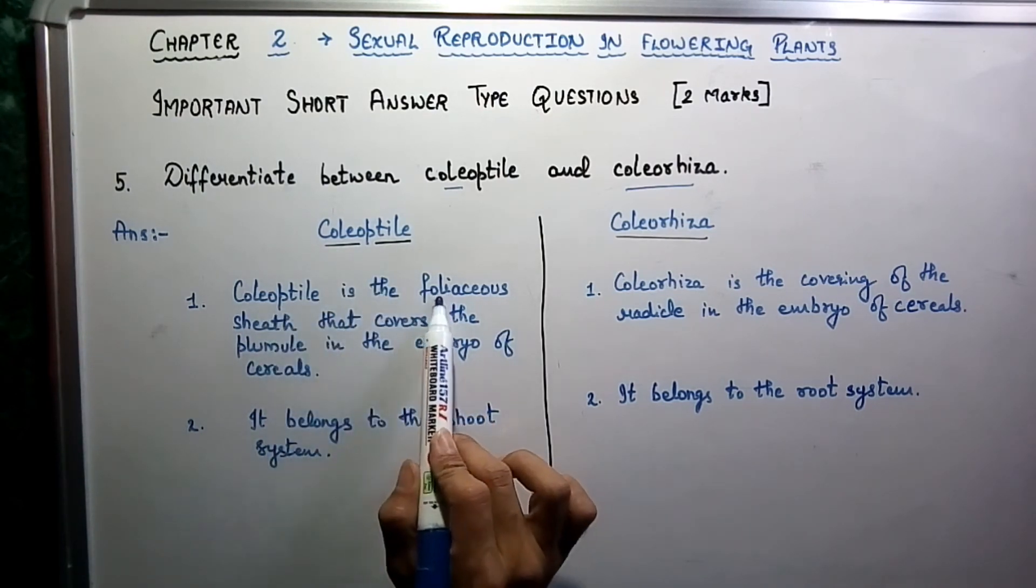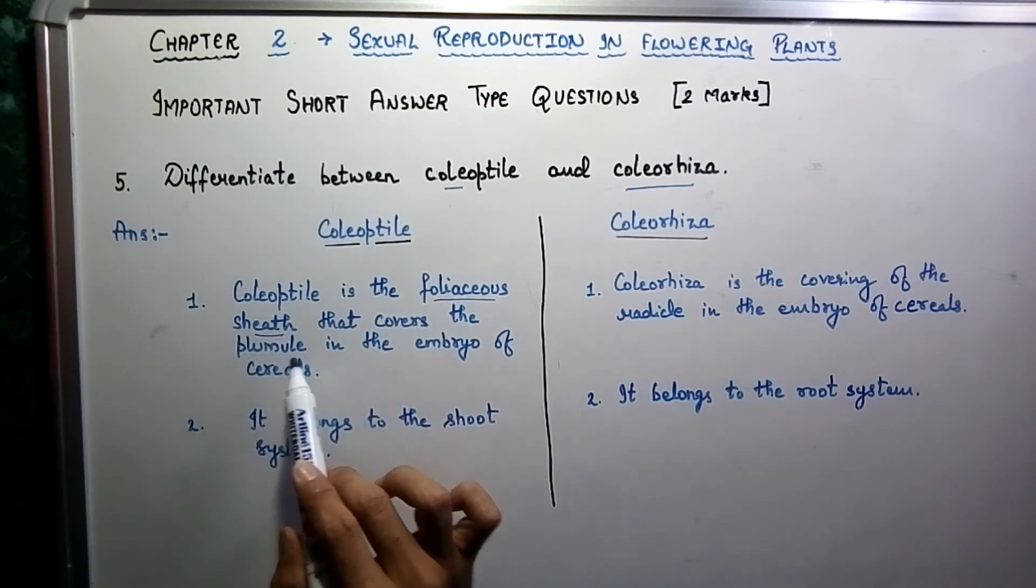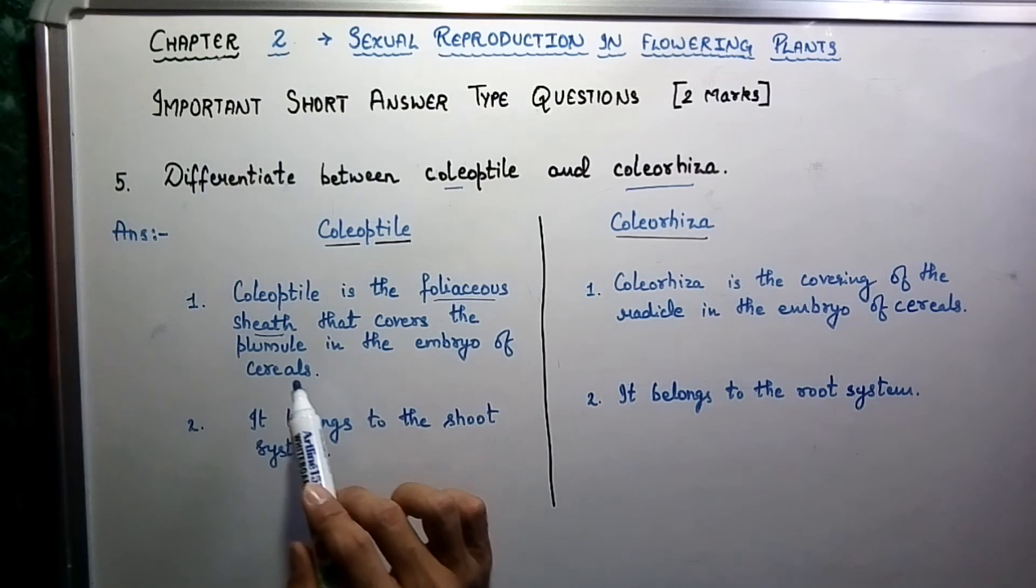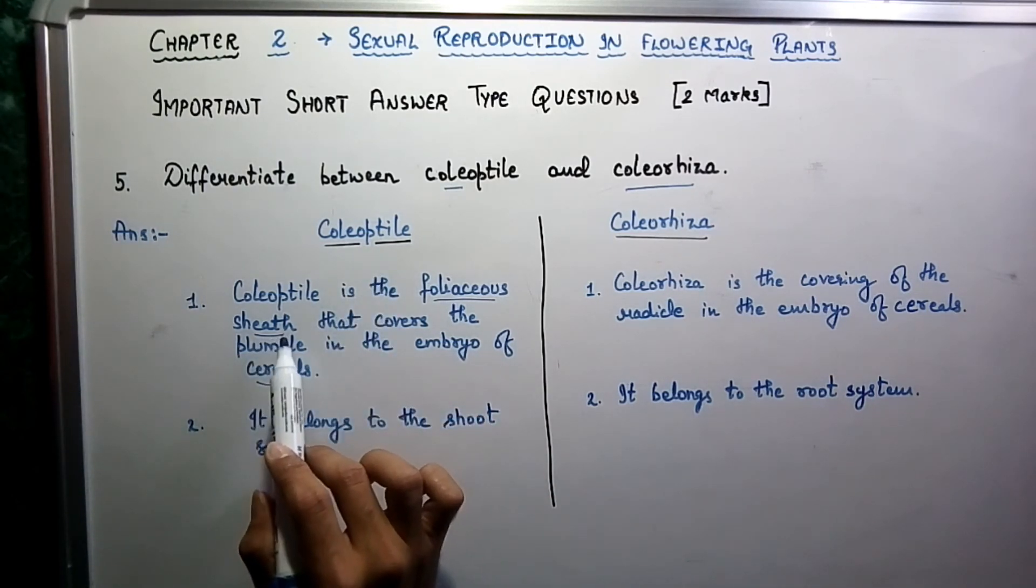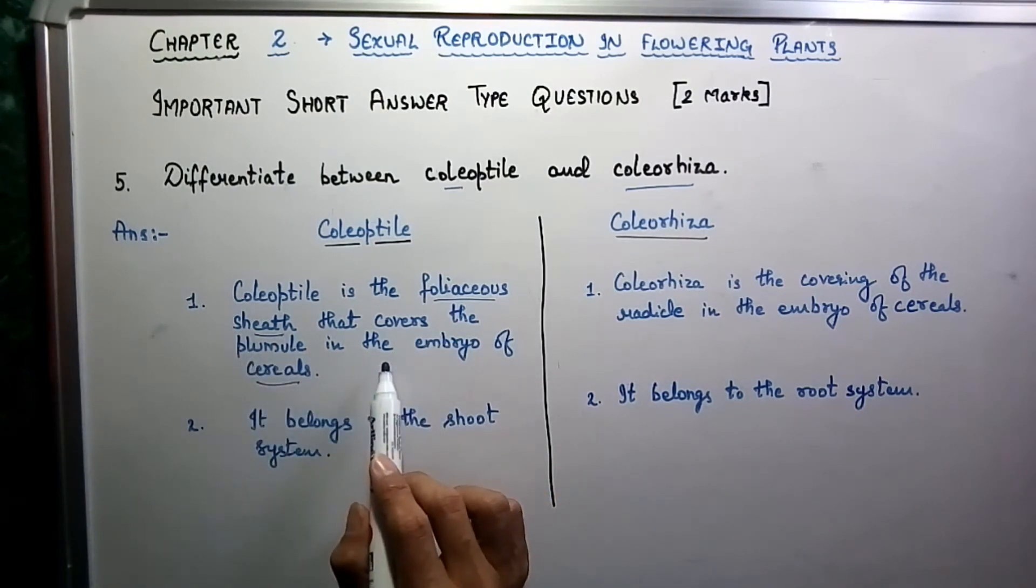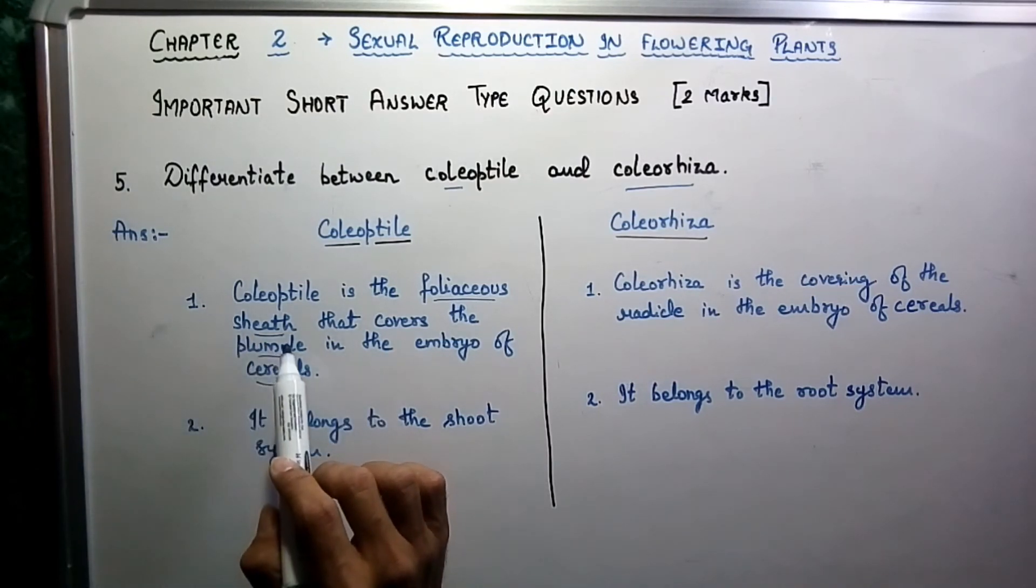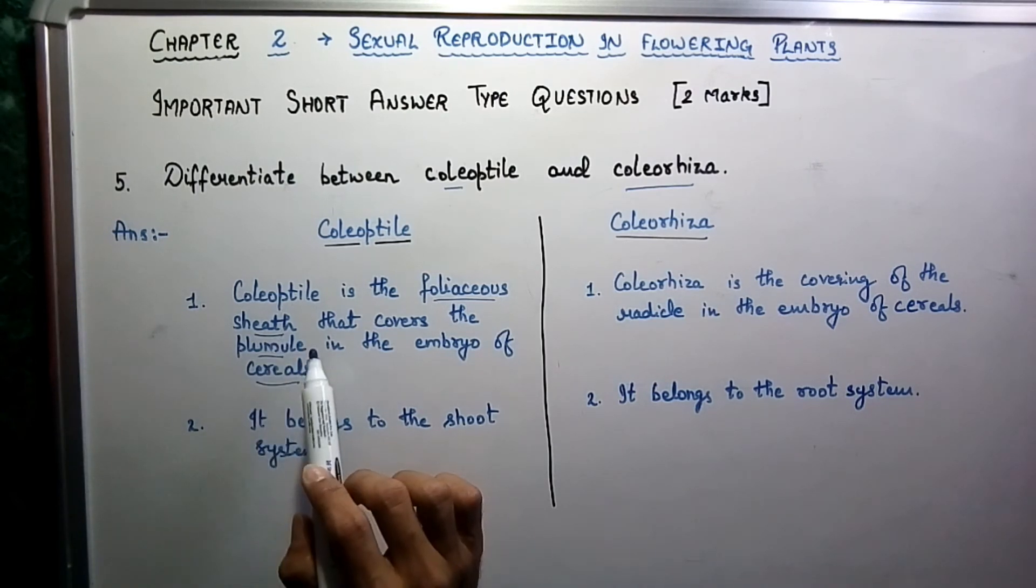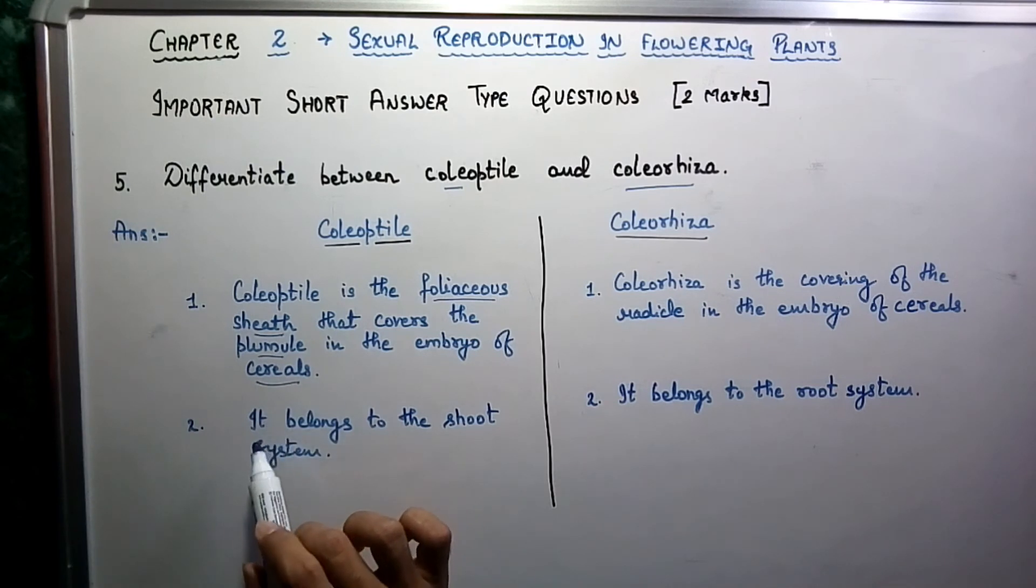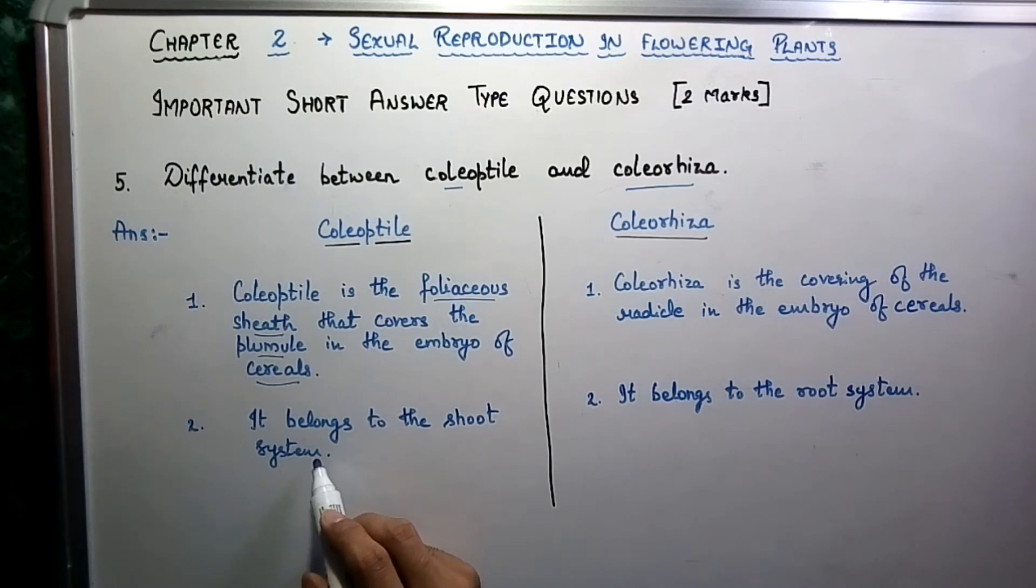Coleoptile is a foliaceous sheath that covers the plumule in the embryo of cereals. Coleoptile is a covering sheet which covers the plumule completely. The plumule develops the shoot system, that is flowers, leaves, stems and all. Yes, it belongs to the shoot system.